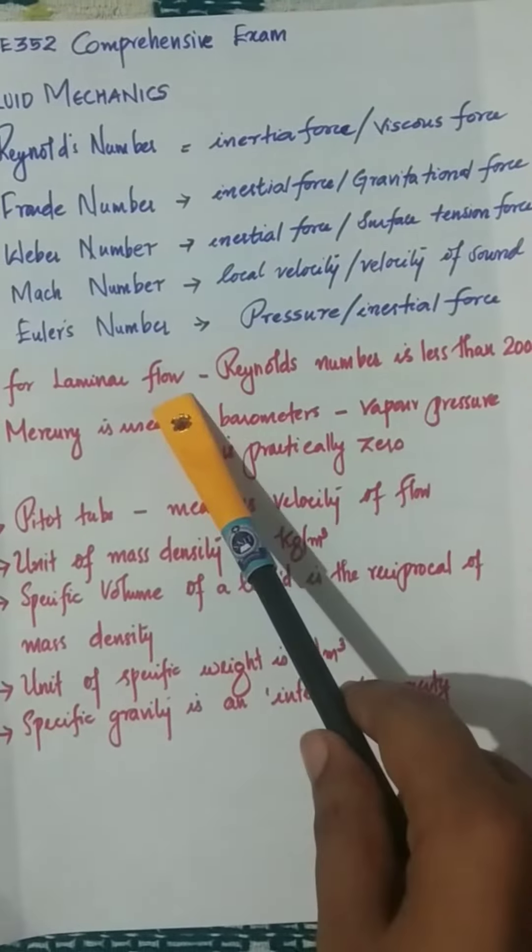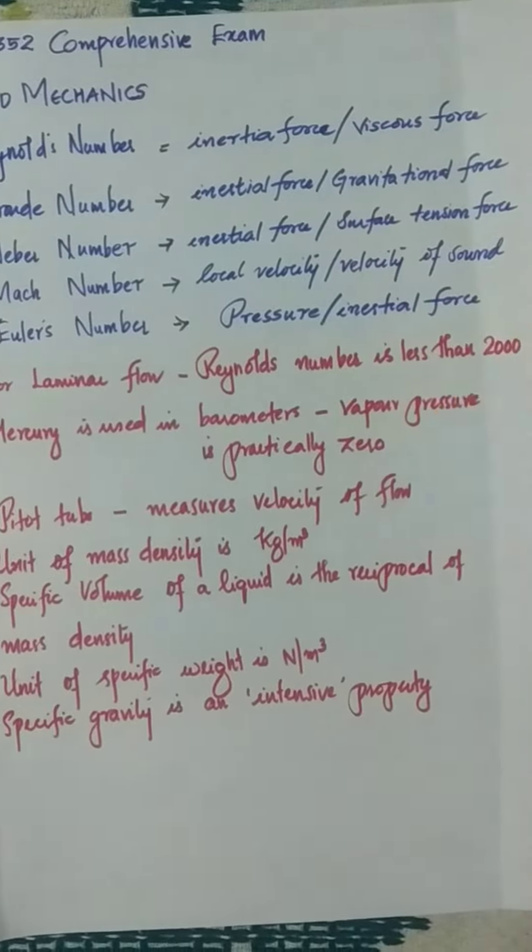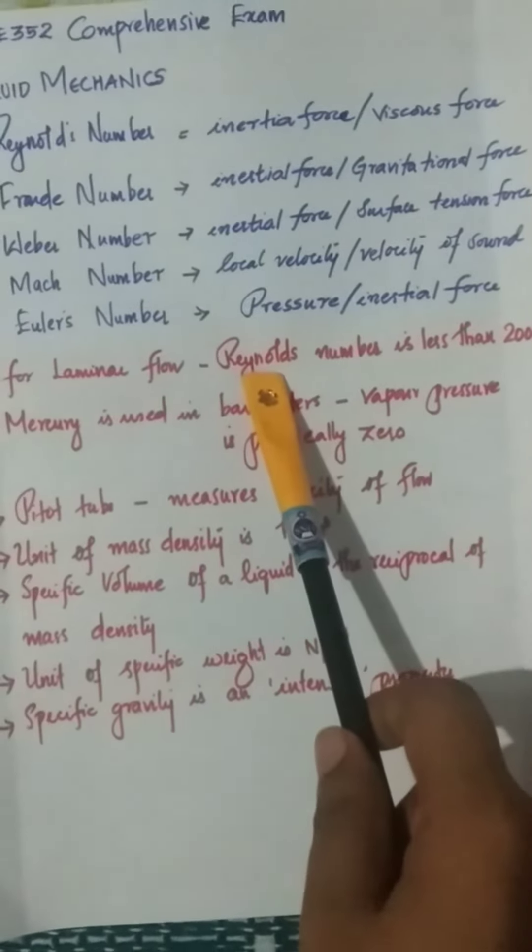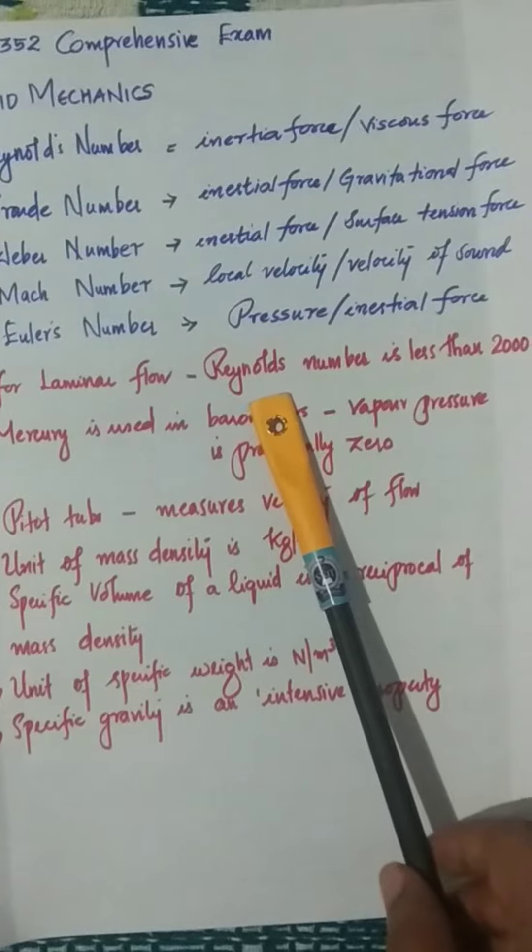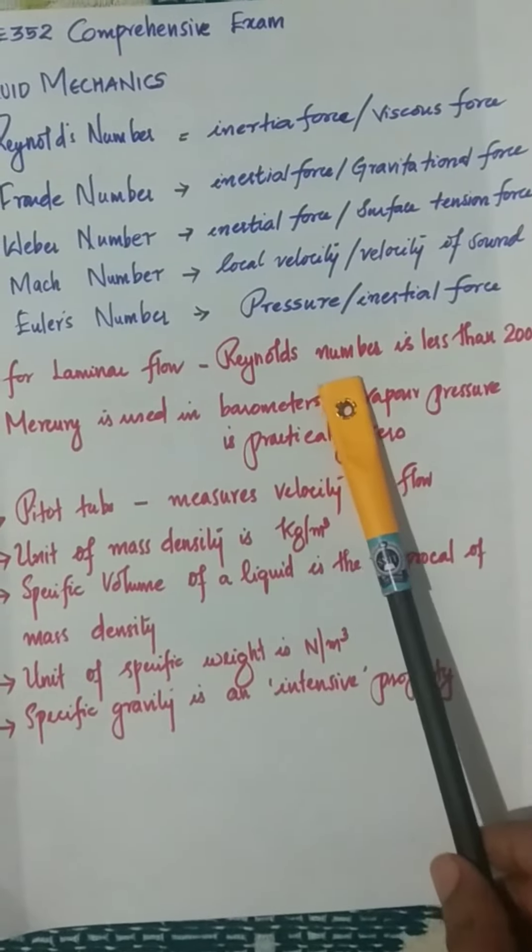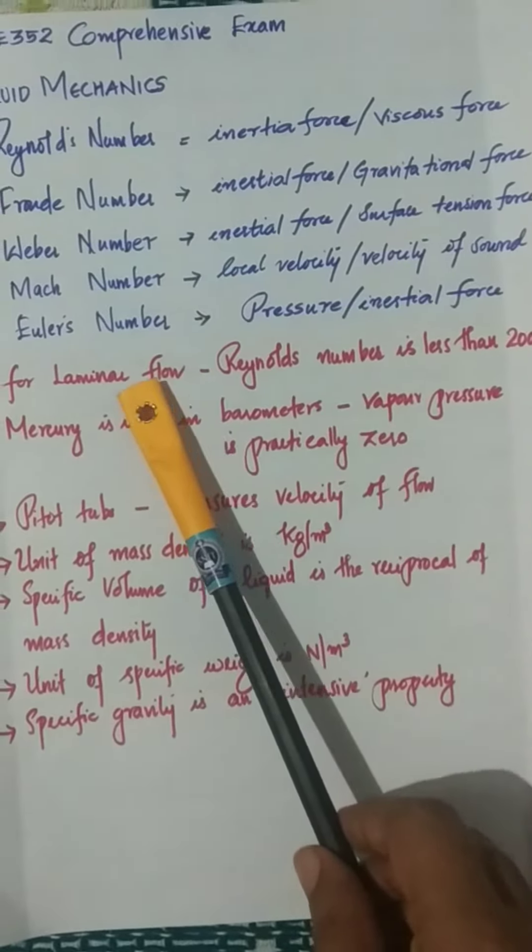As we discussed earlier, Reynolds number is a very important concept in fluid mechanics. If the Reynolds number is less than 2000, the flow is laminar. So you need to think about the case of turbulent flow.